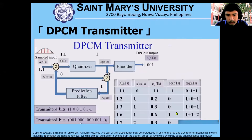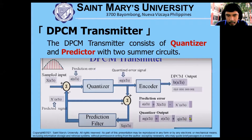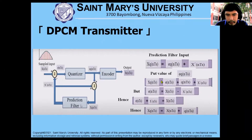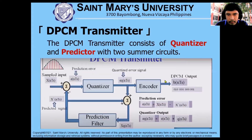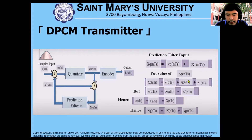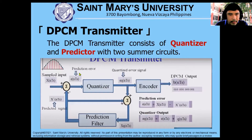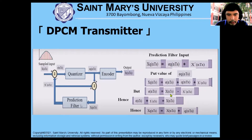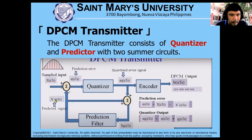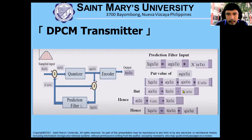When we put this quantizer output on this term, the prediction filter is the output of this quantized error signal — the whole of this first term plus the second term plus the predicted signal x-prime NTS. This prediction error e-NTS is now equivalent to x-NTS plus x-prime NTS, subtracted as depicted in this equation. Transposing this on the other side of the equation to solve for x-NTS, which is the sample input.